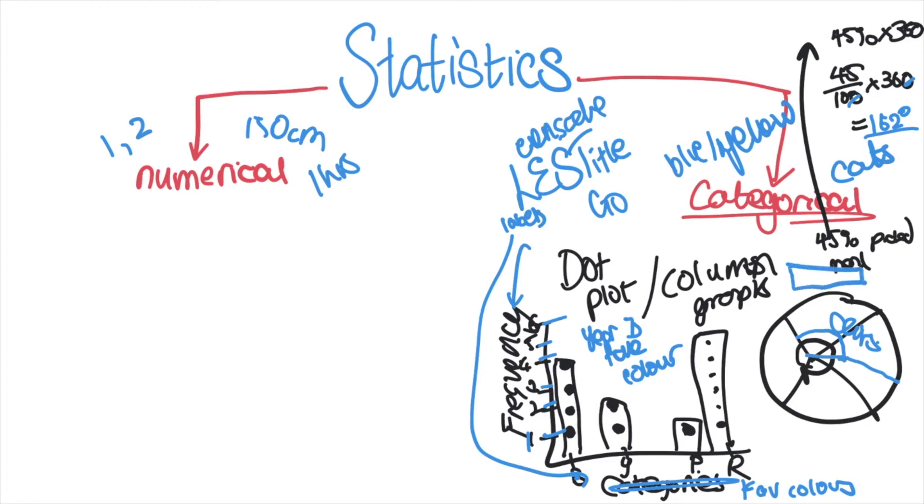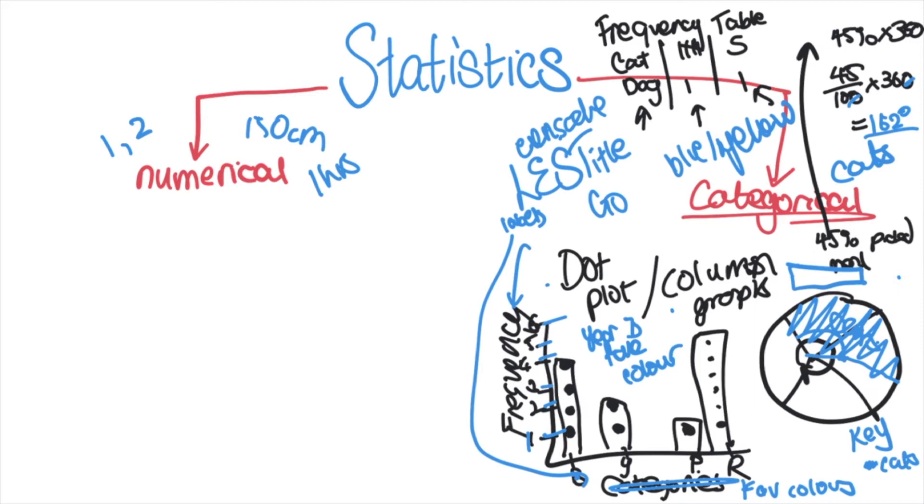So you know, like what animals do you have at home, and you need a key so people know the blue section of that pie chart equals cats. That's categorical data - data to do with categories. You can display it with a dot plot, column graph, or pie chart. But remember, before you get into all of that you need a frequency table. In your frequency table you need your categories, first make a little tally from there, and then you put the actual number that the tally represents.